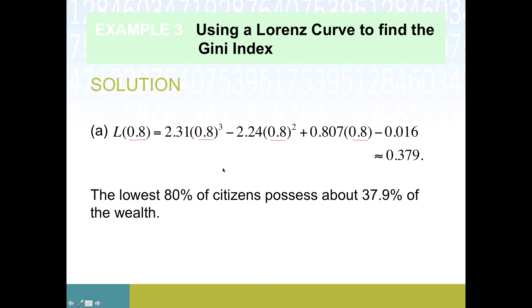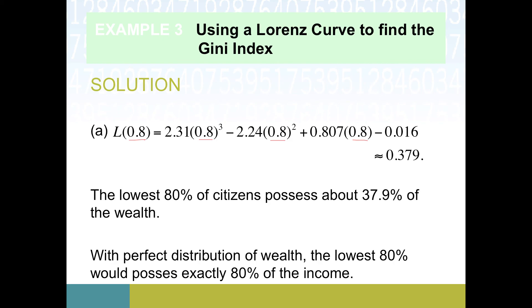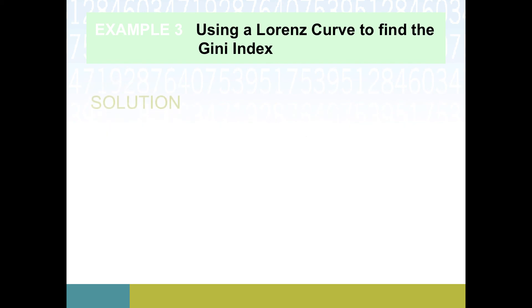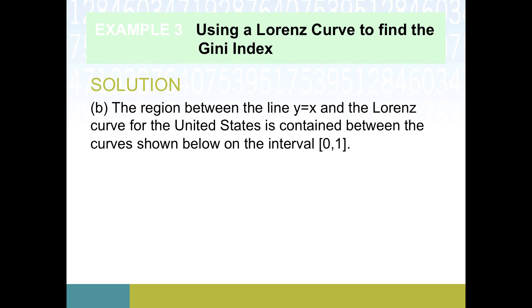Perfect equality would be that the lowest 80% have 80% of the wealth, because then everybody would have the exact same amount of money. That's not the case. So some comparison will have to be drawn here. Is it bad that the lowest paid 80% only control 38% or is that sort of okay in the grand scheme of things? So that's where we hit the Gini index.